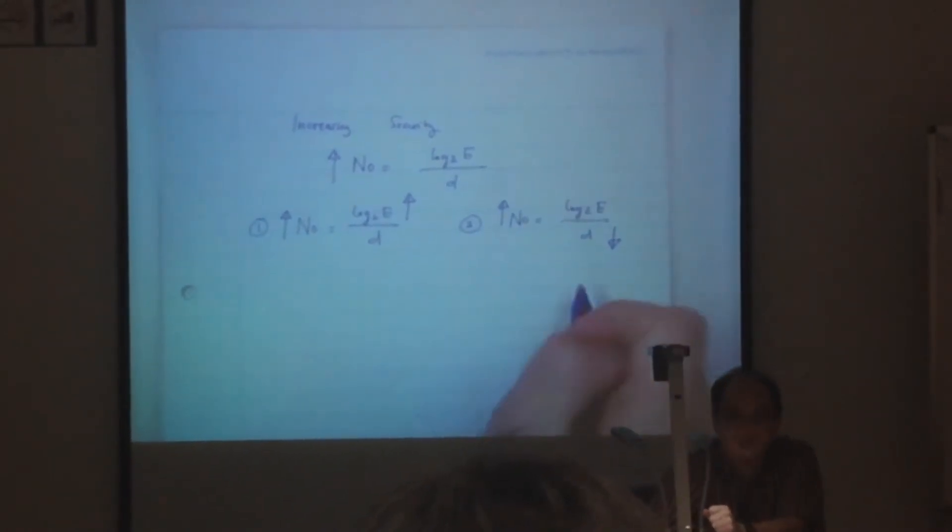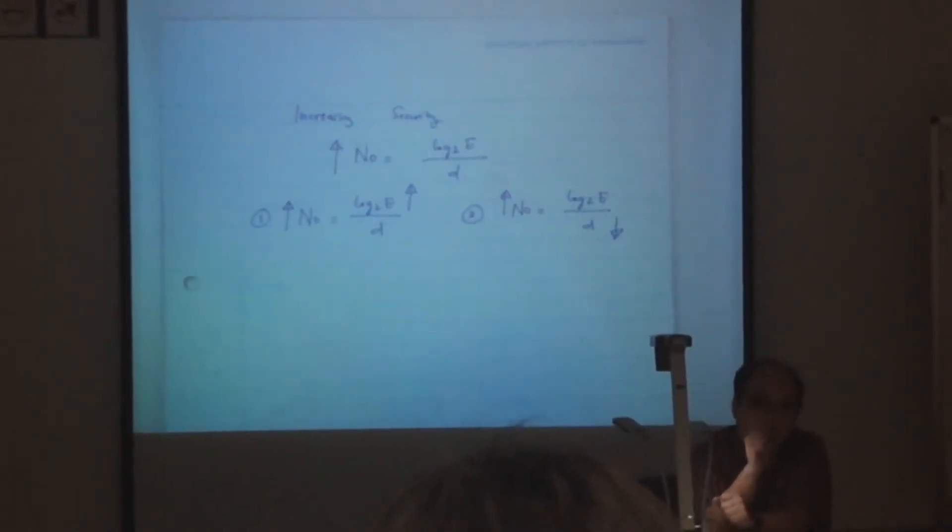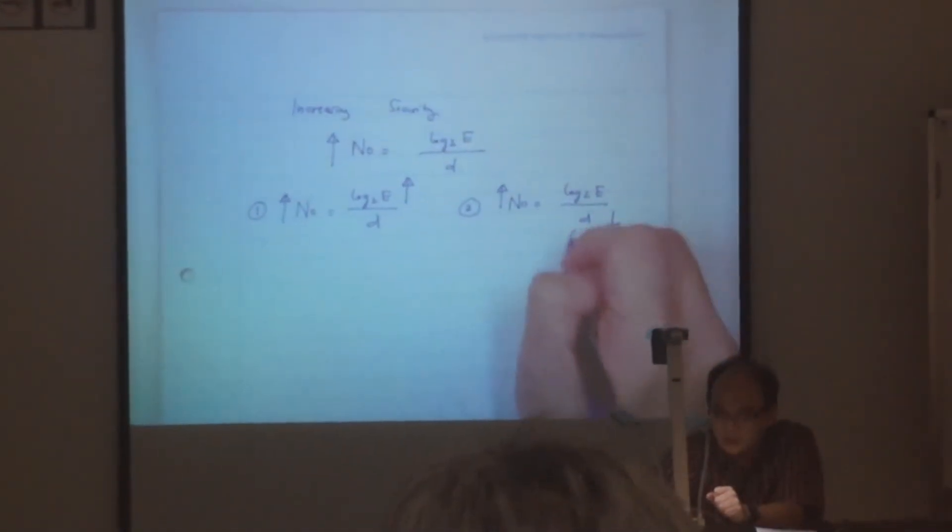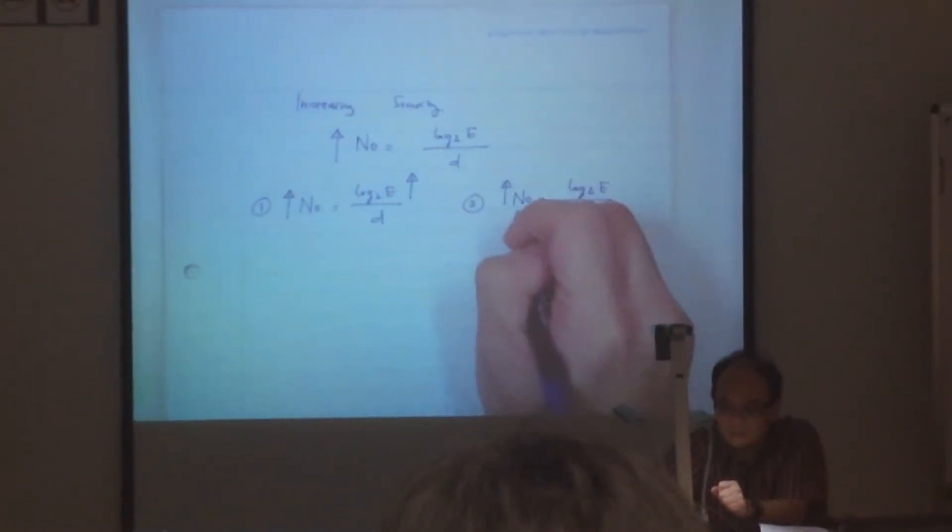That's why if you want to decrease D, don't use the original language, but you can zip it first, for example. Then in this case, you get the redundancy down. Because you can imagine that if D is equal to 0, N0 becomes infinite.